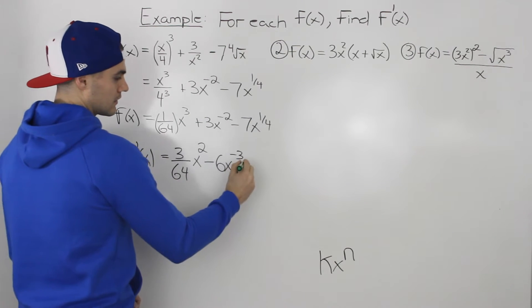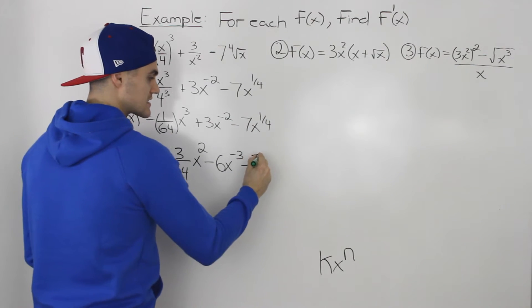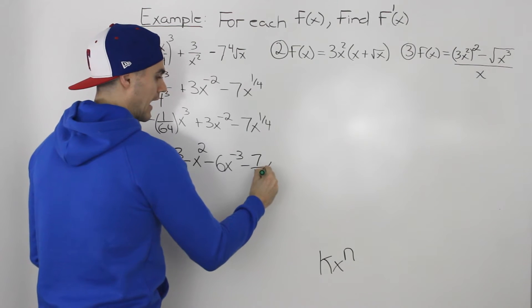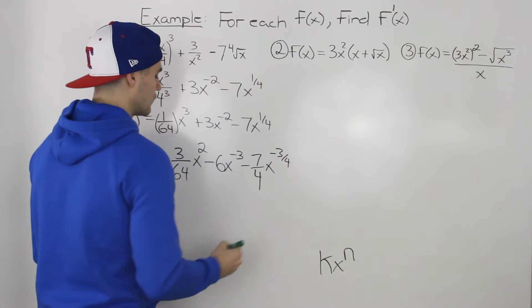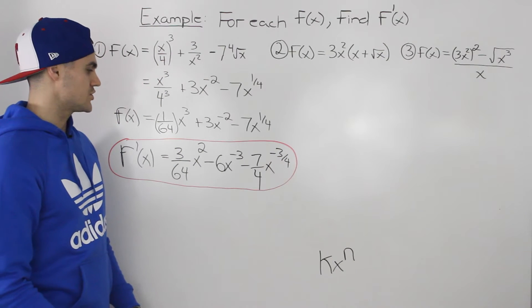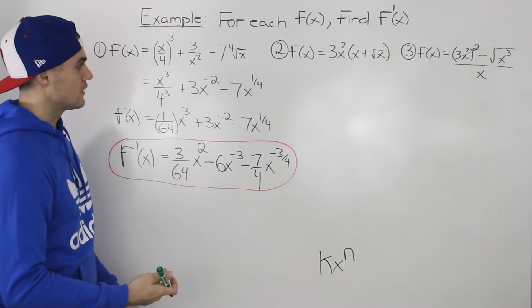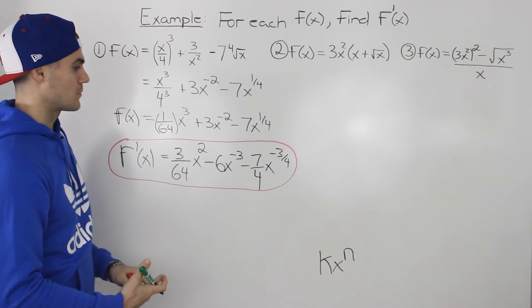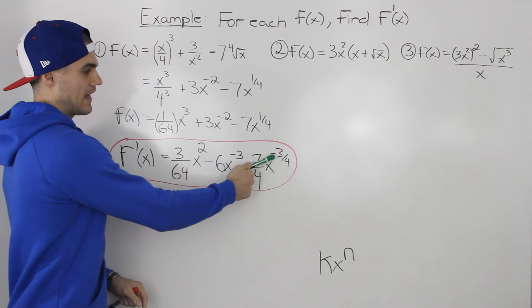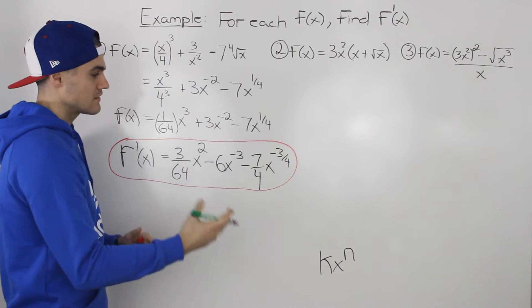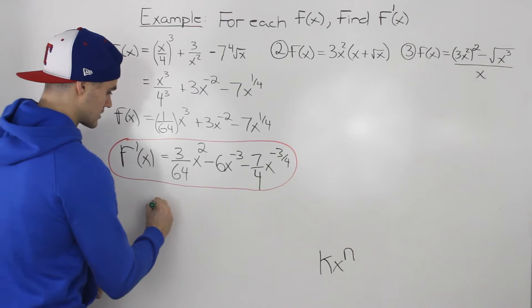For the third term, keeping the constant 7, bring down 1/4: 1/4 times 7 gives 7/4. Subtracting 1 from 1/4 gives negative 3/4. So the derivative so far is (3/64)x² - 6x⁻³ - (7/4)x^(-3/4). Depending on your teacher, some will accept this format, but many will want negative exponents made positive and rational exponents converted to radicals.